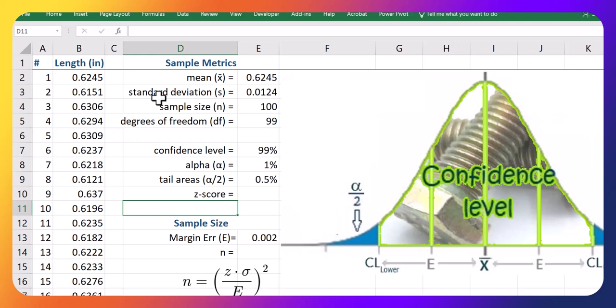We've sampled 100 of them, and we previously came up with a margin of error on that sample. Here are those sample statistics or metrics. Now we want to increase our sample size in order to reduce our margin of error to this amount.